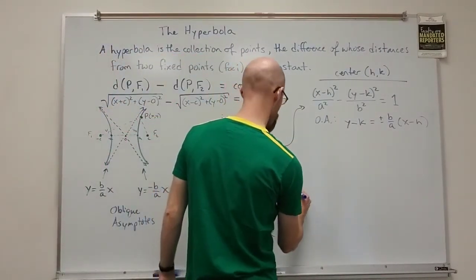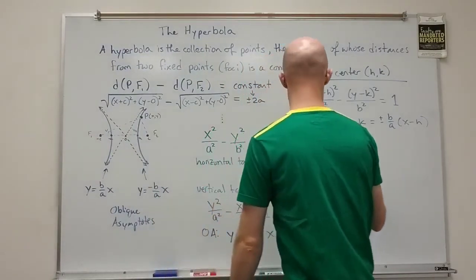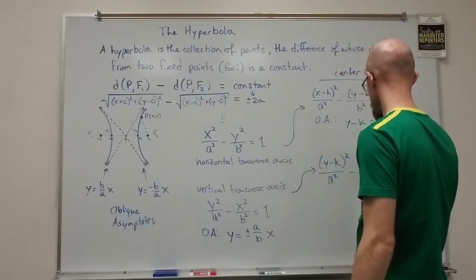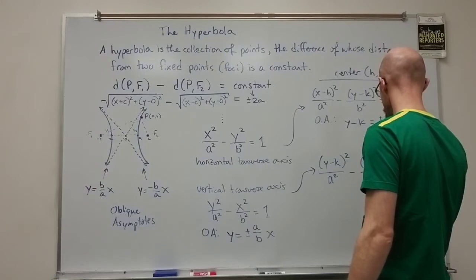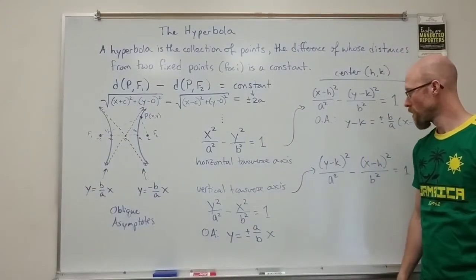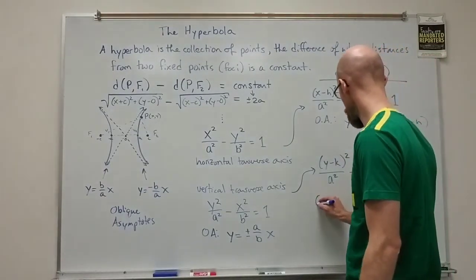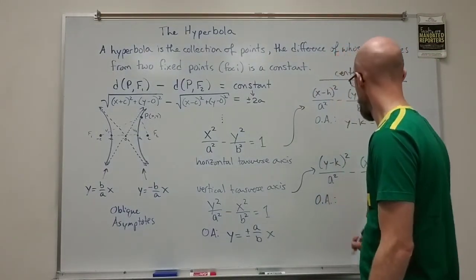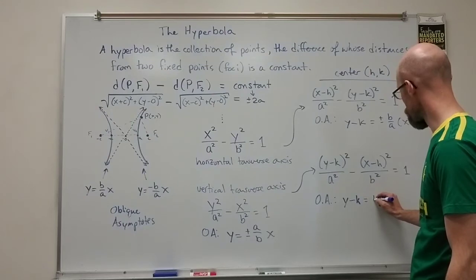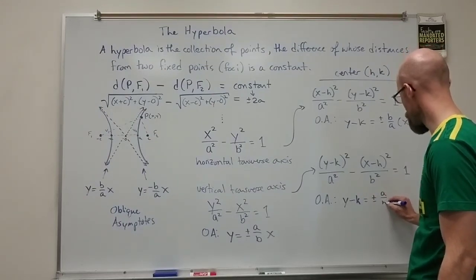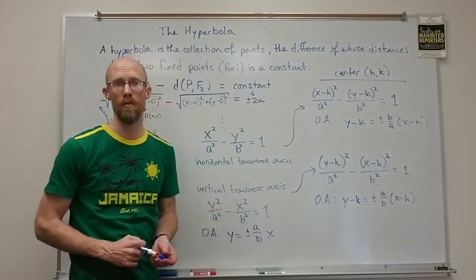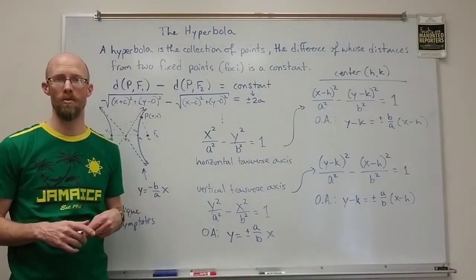Similarly for the vertical transverse axis with center (H, K), you have (y − K)²/a² − (x − H)²/b² = 1, and the oblique asymptotes become y − K = ±(A/B)(x − H). You can do shifts with lines just as easily as with everything else.